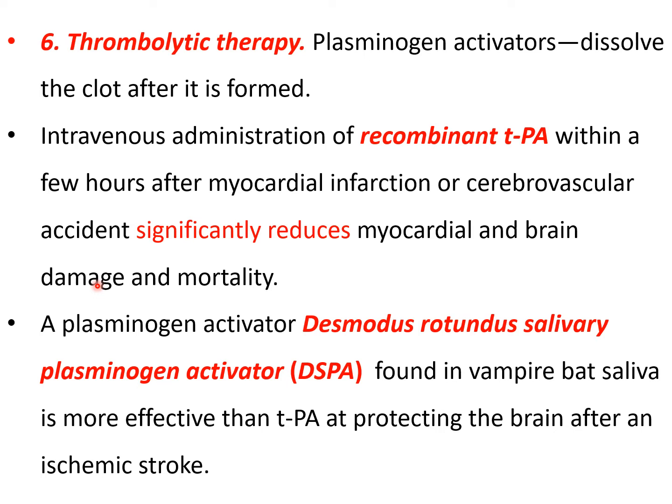Another plasminogen activator is desmodus rotundus salivary plasminogen activator, produced using DNA recombinant technique. This is very effective for treating ischemic stroke, protecting the brain by dissolving the clot very quickly. This comes from the saliva of desmodus rotundus — vampire bats — which have clot-removing thrombolytic activity in their saliva.